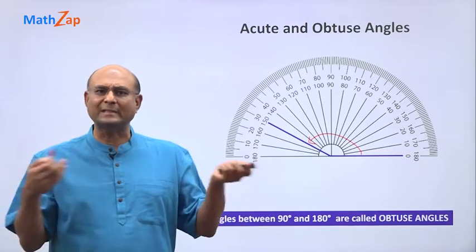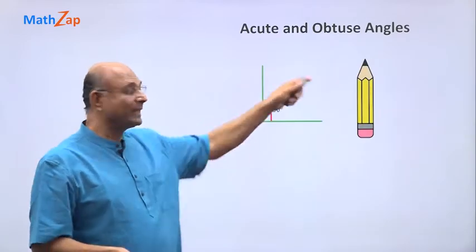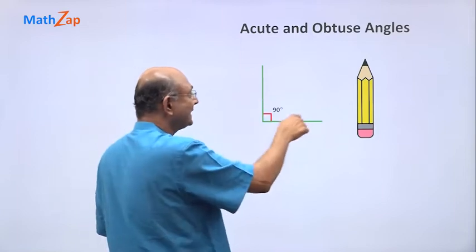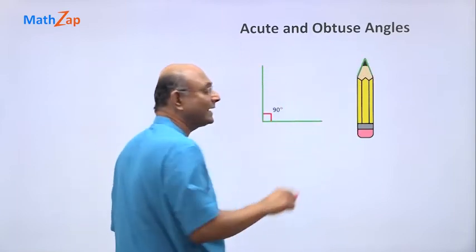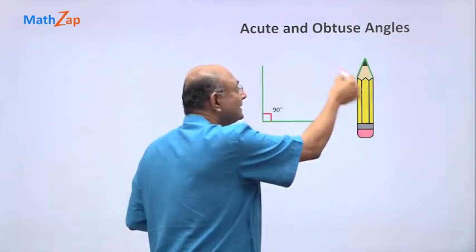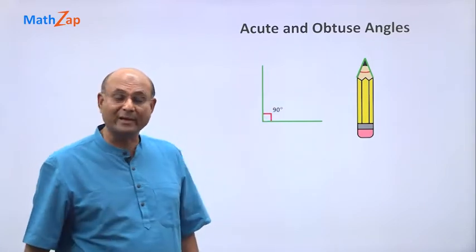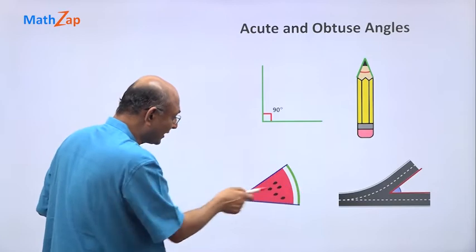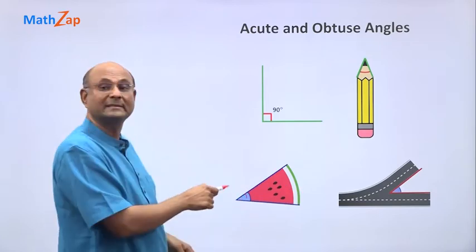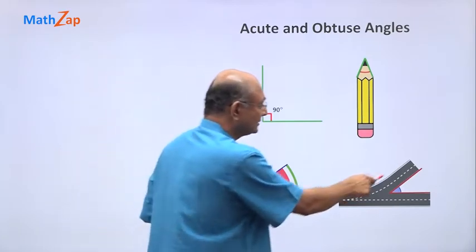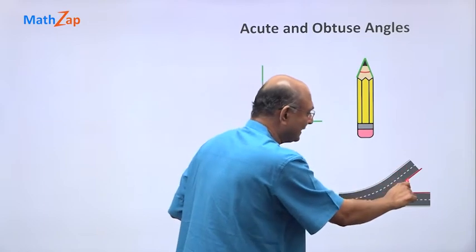Do we use acute and obtuse angles around us? Can we see them? Yes. If you take this pencil, this is 90 degrees. Look at the pointed end of the pencil. Clearly this angle is smaller than 90 degrees—that's an acute angle. If you take this piece of a watermelon, this angle is an acute angle. These two roads are parting ways, the angle between the two parts is an acute angle.